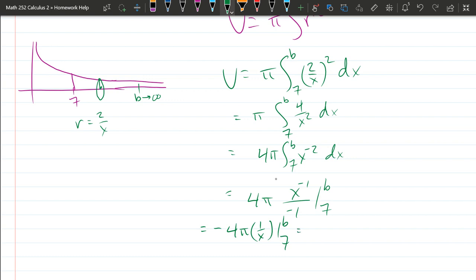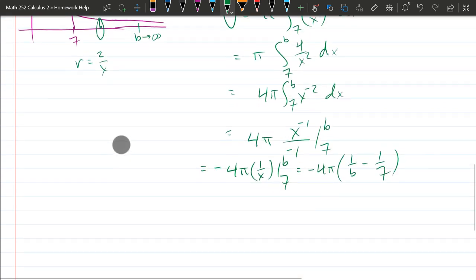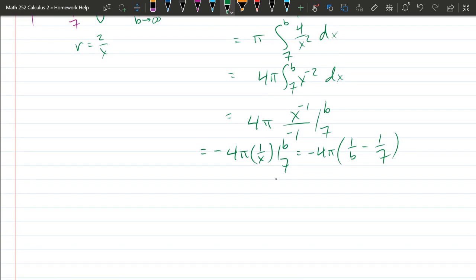So plug in b. We have one over b minus one over seven. All right. So now we're gonna take the limit. Okay.